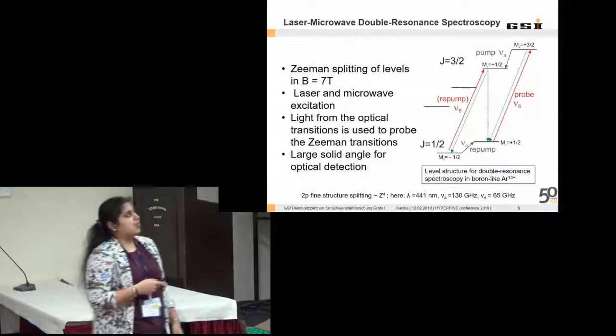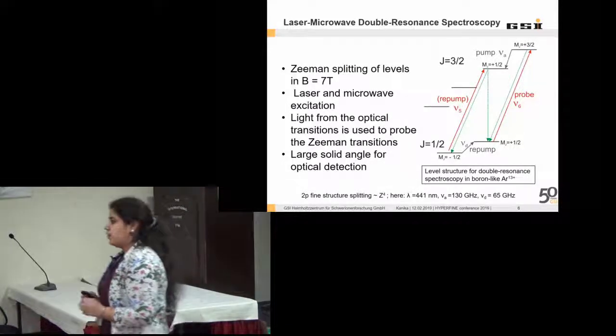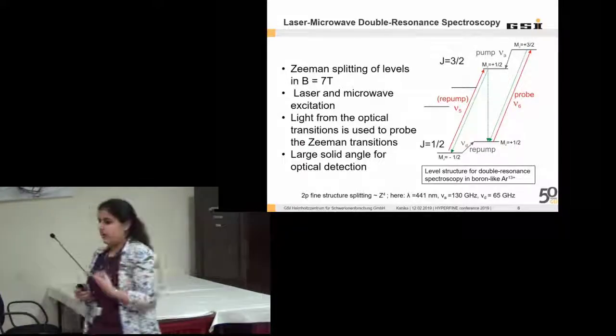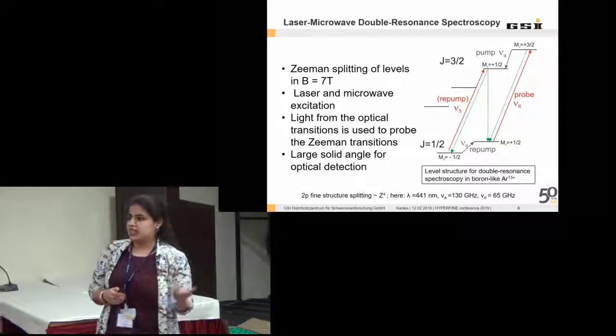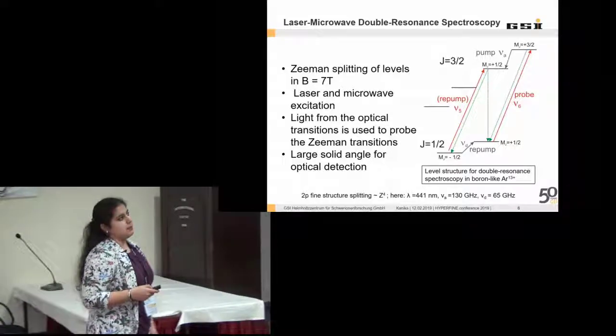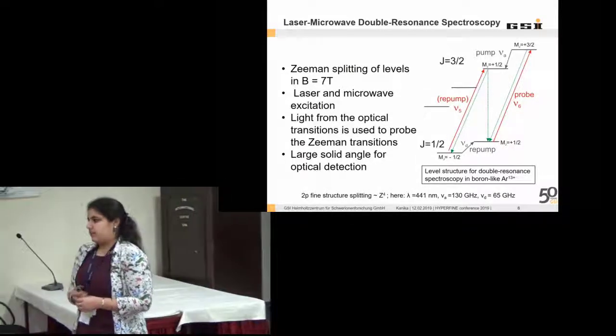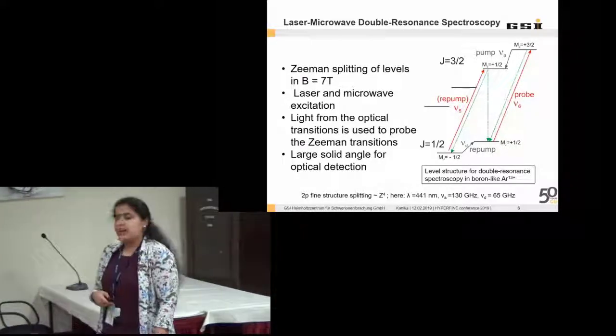Next, I come to laser microwave double resonance spectroscopy technique, which we use for the measurement of Larmor frequency. We saw that we need two frequencies, Larmor frequency and the cyclotron frequency. The cyclotron frequency we measure using the resonators. The Larmor frequency we measure using the laser microwave double resonance spectroscopy technique. When an ion is in a magnetic field, the energy levels would split because of the Zeeman effect.